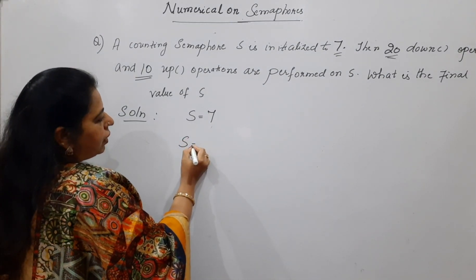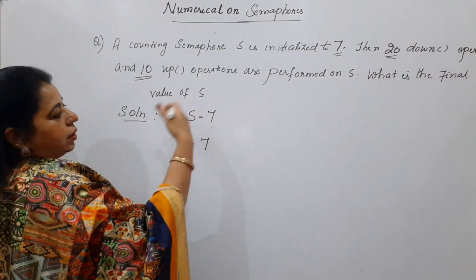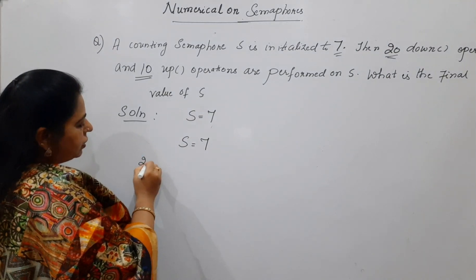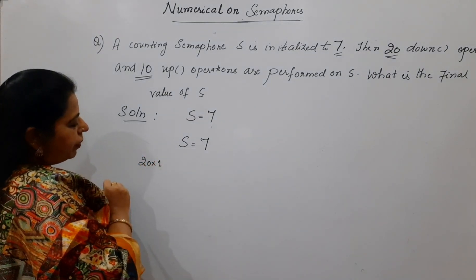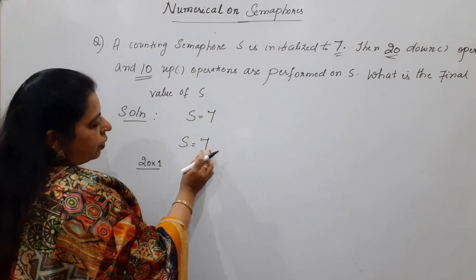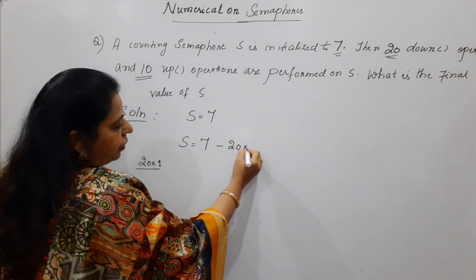Initial value for the semaphore is initialized to 7. So, S equal to. Now, what you do is first write down as it is 20 down. Down is what? Always decrementing the semaphore value by 1. That is 20 times you have to decrement the semaphore value by 1. So, when you are decrementing you have to subtract from the existing number only. So, you will be writing 20 times 1.